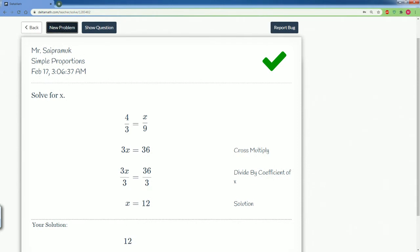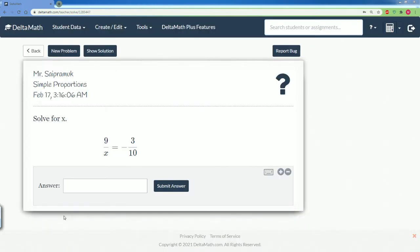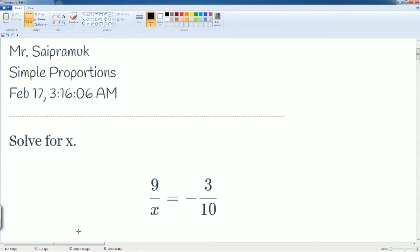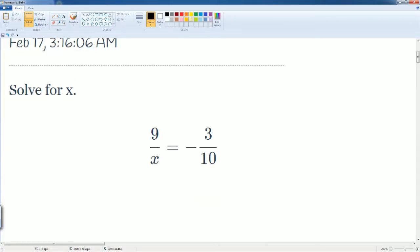Let's do a couple more problems. Here you're given the same instruction to solve for x and you're given this proportion. Yes, there is a negative, but nothing changes about the steps in which we solve the problem. We're still going to cross multiply, so 9 is going to be multiplied across with the 10.